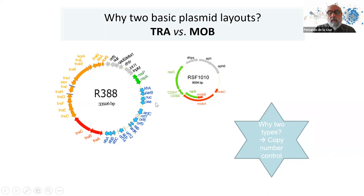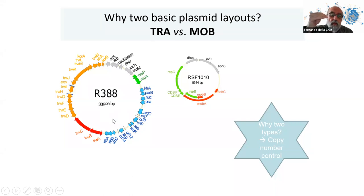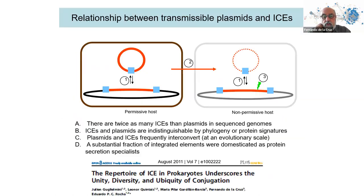If you're small you can have a high copy number and don't require partition systems. But if you're large, you have a low copy number and require a partition system — otherwise the plasmid will be unstable and lost during cell division.